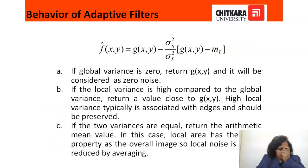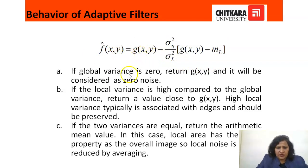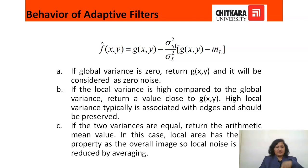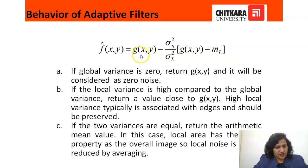Behavior of the adaptive filter — first case: if the global variance sigma_n squared is zero, then this complete factor will be zero, and the approximated F(x,y) will be equal to G(x,y). When global variance is zero it means there is zero noise in that region — no noise is there. So if no noise is there, the output image should be equal to the input image.